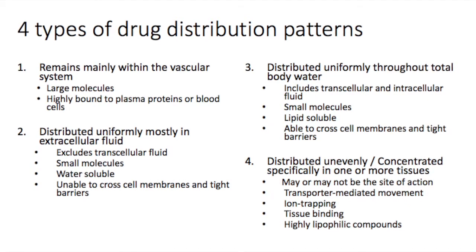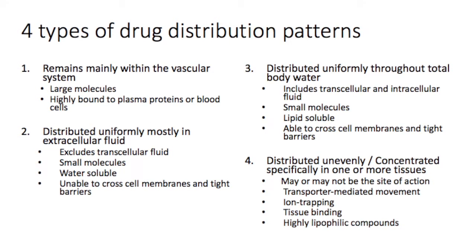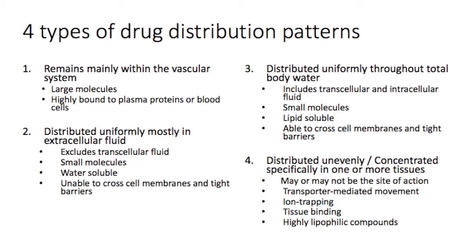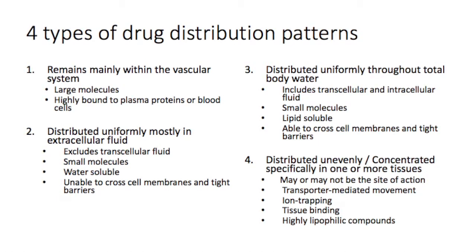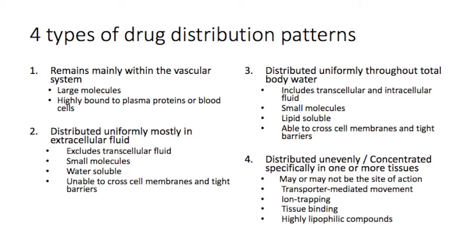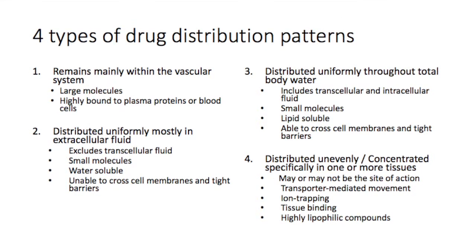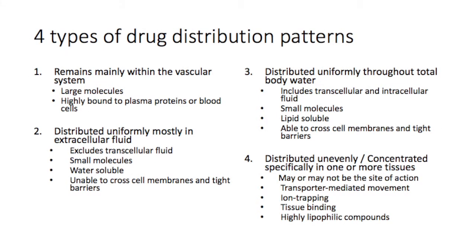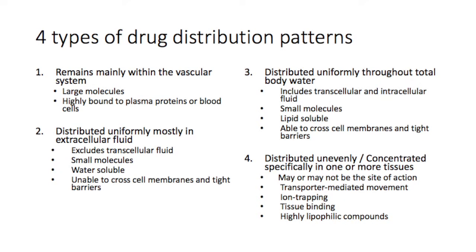Then we have drugs that distribute uniformly through total body water, including intracellular and transcellular fluids like the cerebrospinal fluid. These drugs are small and lipophilic so they can pass easily across tight epithelial barriers and into cells, and they have volumes of distribution similar to total body water. Finally, there are drugs that distribute unevenly through the body because they accumulate in specific tissues — these get trapped through mechanisms like binding to tissue components or ion trapping. Some drugs are also actively transported across epithelial barriers, allowing them to accumulate at higher concentrations on one side, and they tend to have very large volumes of distribution.